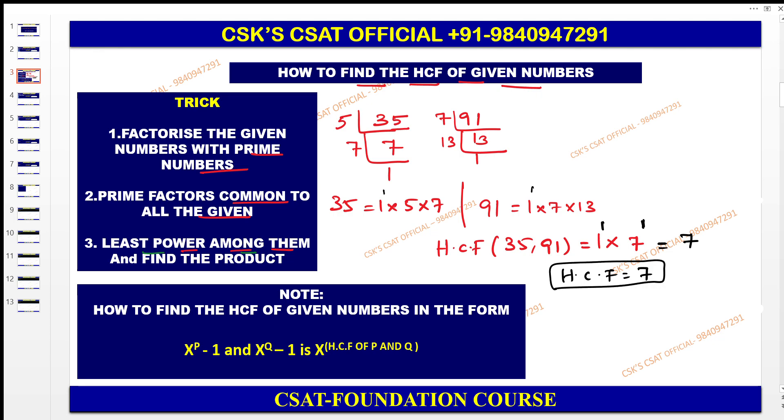But in this case it is in the form of exponential: x^p - 1 and x^q - 1. In such a case what you need to do is, see here the base is common. In such a situation what you need to do is you just find the HCF as x^(HCF of p, q).